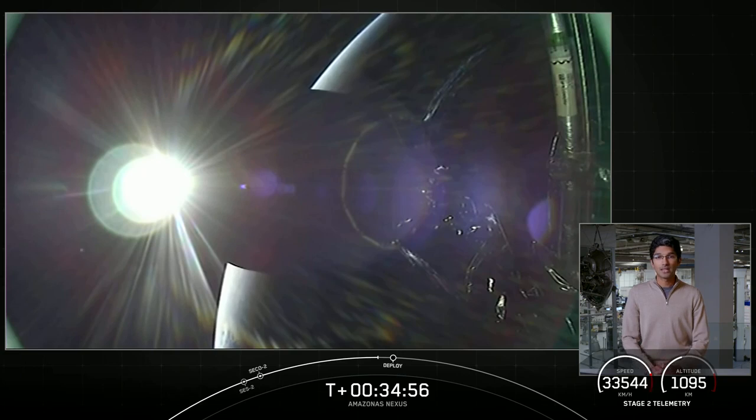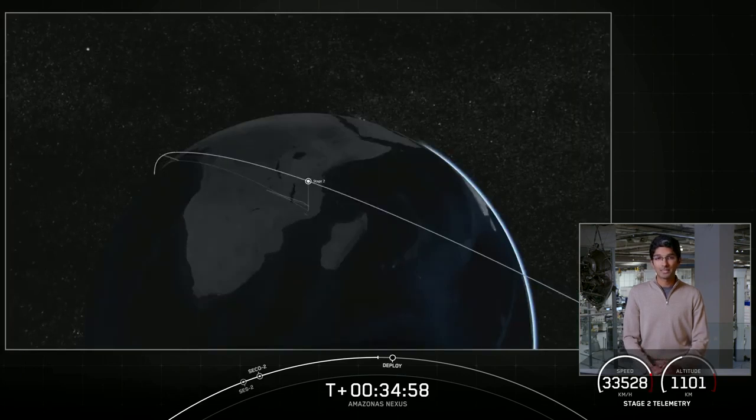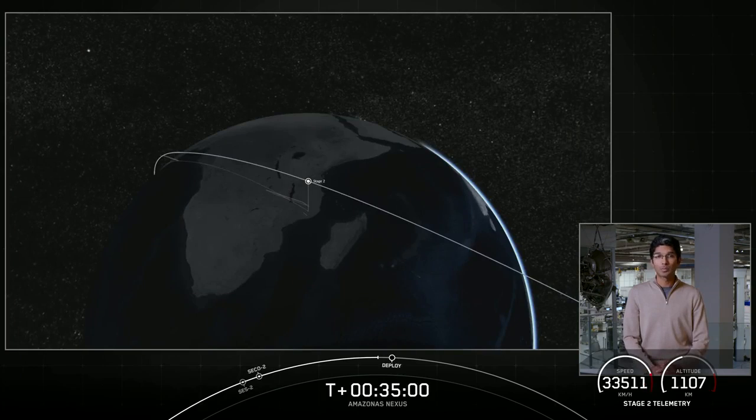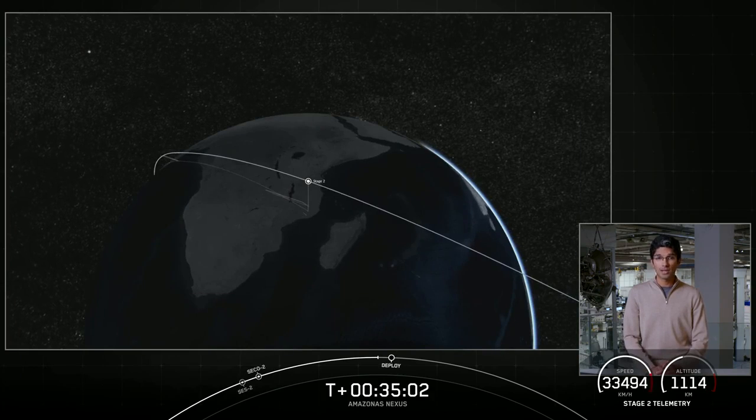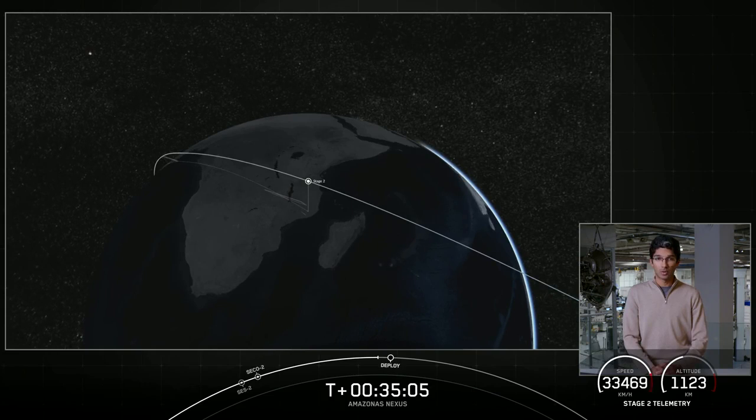As a reminder, the Amazonas Nexus satellite will serve as a replacement for Amazonas 2 and will provide coverage for North and South America, Greenland, and the North and South Atlantic corridors.